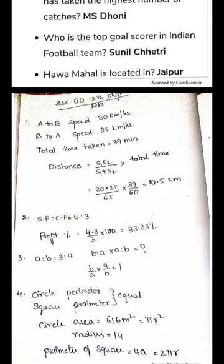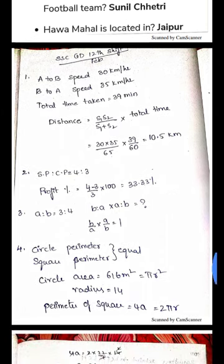A travels to B and B travels to A, and the total time taken is given. This is about distance between A and B, a standard question. Distance equals S1 times S2 divided by S1 plus S2 times total time.